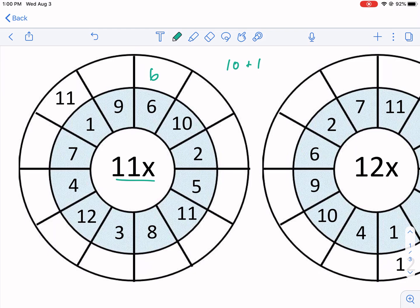1 plus 10 is 11. So if we multiply by 1, we get itself. We multiply by 10, like for example 6, if we multiply 6 times 1, we get 6. 6 times 10 is 60. We just get the same number twice for the digits. Essentially, that's what you're doing.